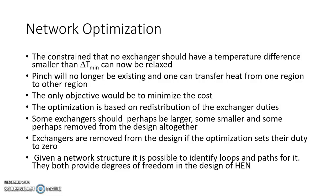The constraint that no exchanger should have a temperature difference smaller than delta T minimum can now be relaxed. The reason for keeping that constraint was that we wanted a tight energy balance and never wanted to go beyond the energy target. Now, from a capital cost perspective, if we relax this for some exchangers, capital cost can decrease and total cost will also decrease. We will maintain the delta T which is practically possible for the given type of heat exchanger.